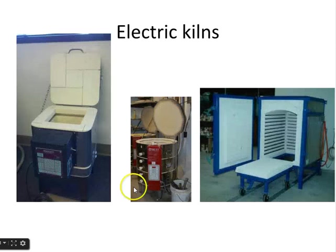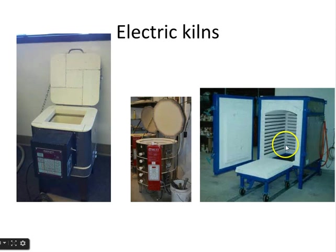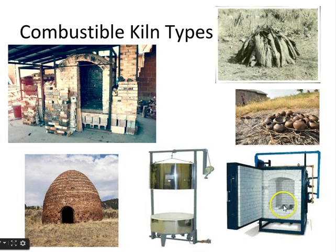These are electric kilns: a square top loader, a round top loader much like the ones we have in back, and a front-loading electric kiln. You can see all the coils down the side of the electric kiln — that's what heats it up. In a gas kiln, you don't see that; you just see the spaces between the brick where the gas burners are.